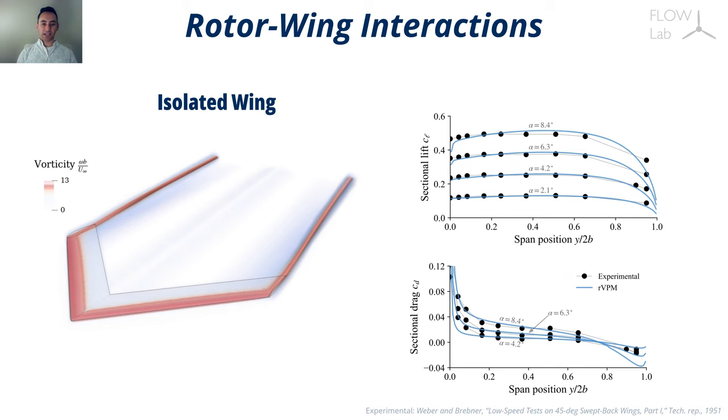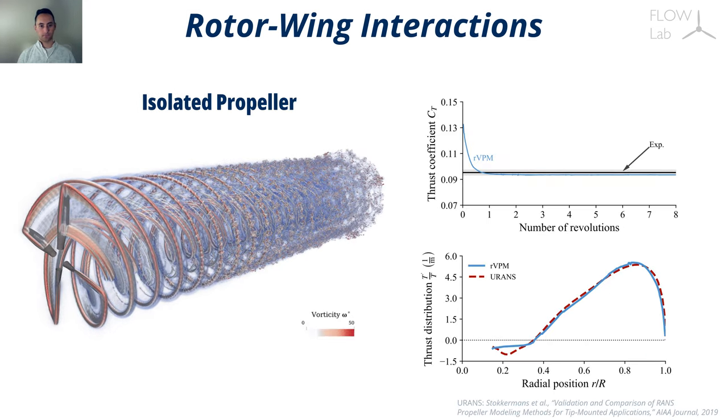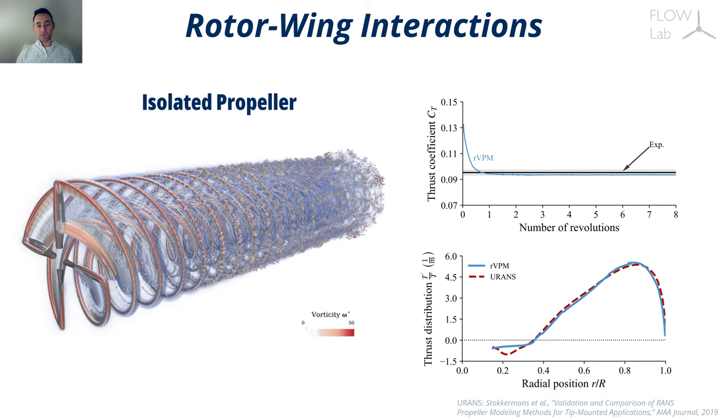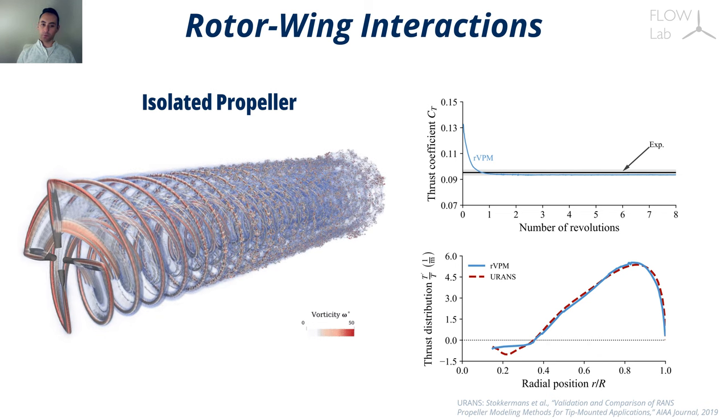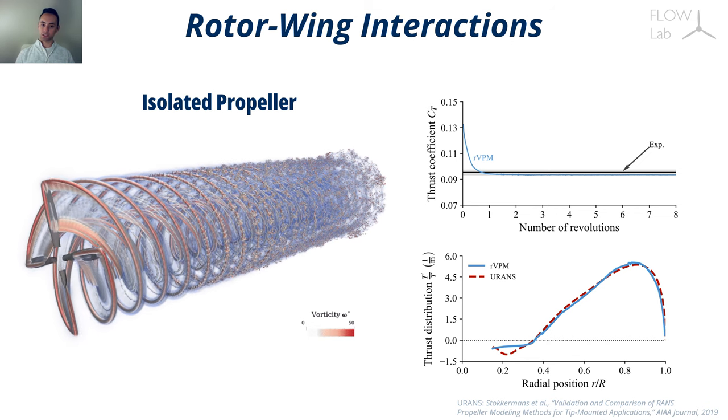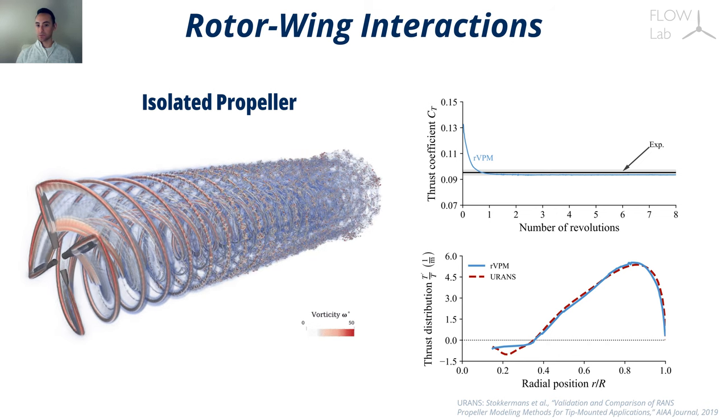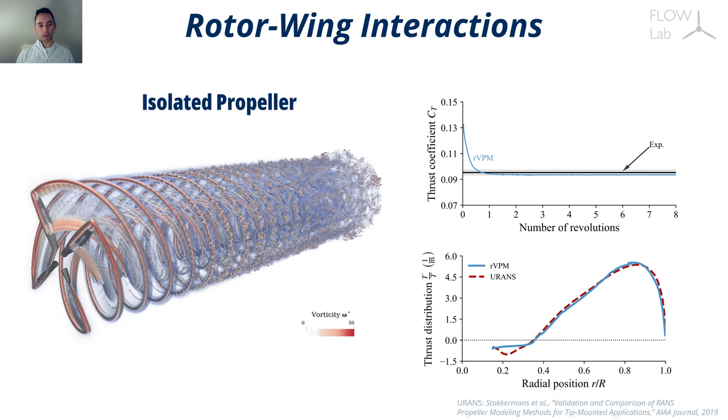First, we validated the simulation of an isolated wing, predicting an accurate lift distribution up to moderate angles of attack. Not only can we predict the lift, but we can also capture the right drag distribution. We also validated an isolated propeller, resulting in a thrust within 2% of the experiment, and an accurate blade loading.